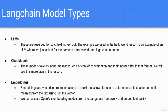LangChain allows us to use three different types of models. The first type is a straight-up large language model whose sole purpose is taking a string of text in and producing a string of text out. The differentiating factor is that it's not trained and optimized for chat - that's not how we work with it, and there's not a lot of functionality to work with LLMs in a chat way. That's what an LLM is in LangChain.